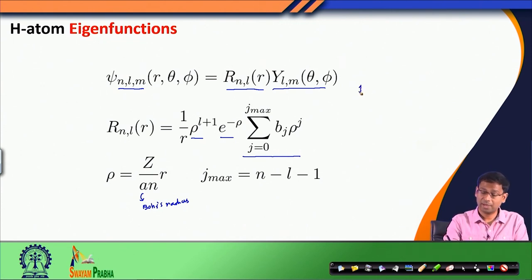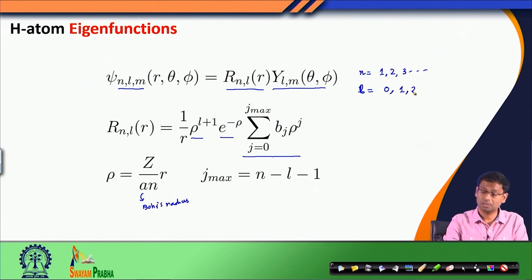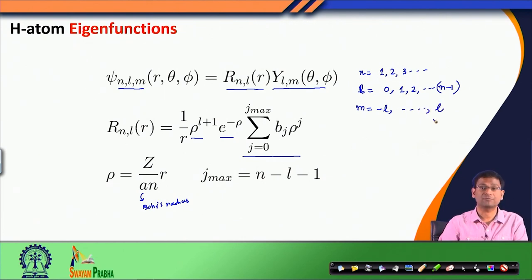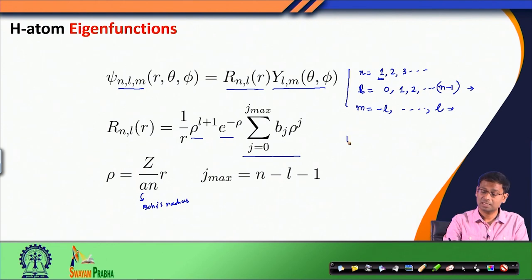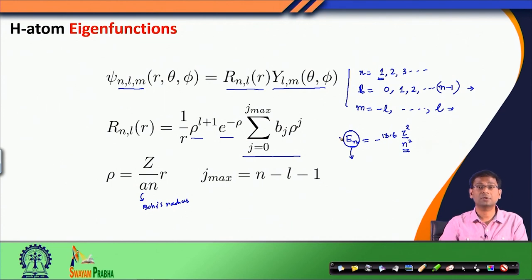For a given n, l goes from 0 to n−1, and for a given l, m goes from −l to +l in steps of 1. For a given n I have n values of l, and for a given l I have 2l+1 values of m. Together, for energy level E_n = −13.6·Z²/n², the energy depends only on n, while the number of eigenfunctions is n².